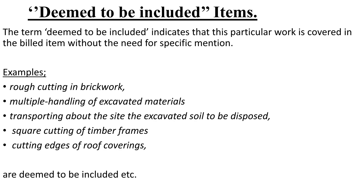The next item is deemed to be included items. These are items that we do not even need to calculate for them — they are already included. For example, rough cutting in brickwork: whenever we are calculating the cost of bricks, we have to include the rough cutting in brickwork automatically. These are items which are deemed to be included; they are just in the BQ, we don't need to state them separately. Other examples include multiple handling of excavated materials and square cutting of timber frames — when we mention timber frames that are square cut, the cost of cutting them into square is automatically added.